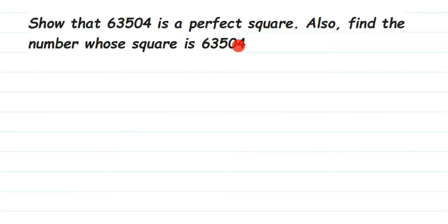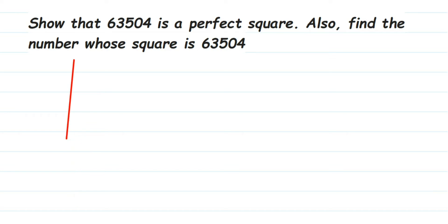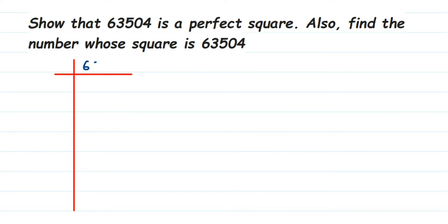To do this, we're going to use the prime factorization method. This method is very simple and we can do it easily. We're going to prime factorize 63504. Remember when you're prime factorizing, take only prime numbers. We'll start with the first prime number, which is 2, because the given number is even, so it's a multiple of 2.